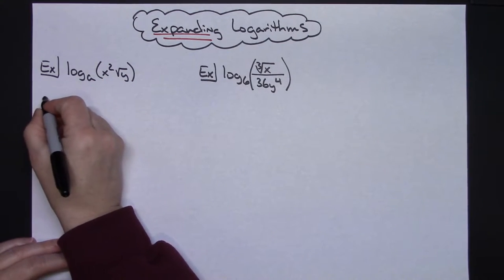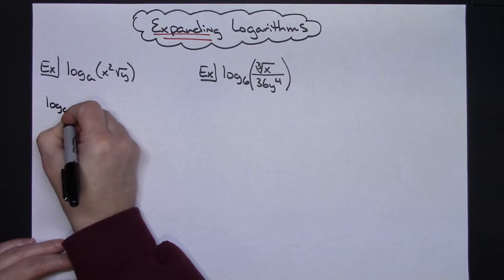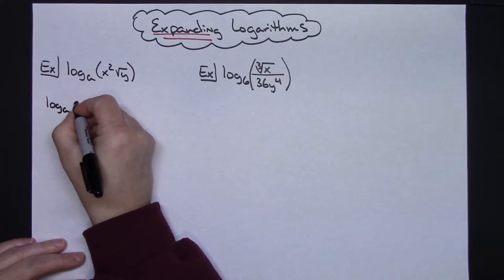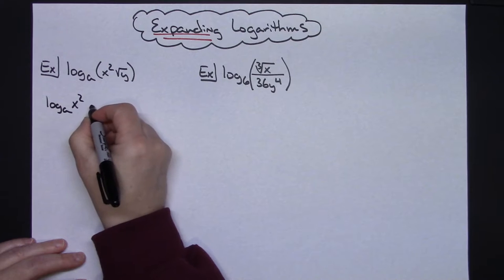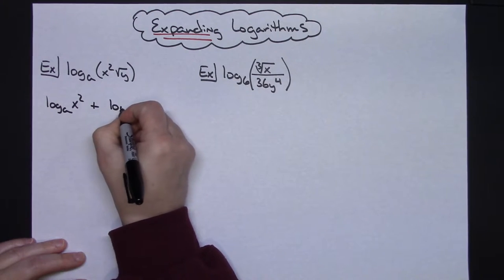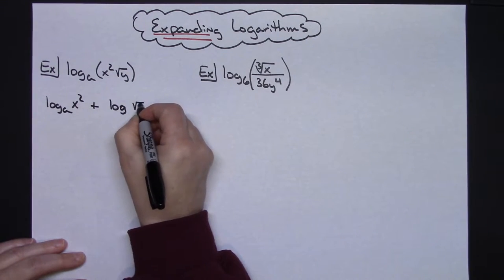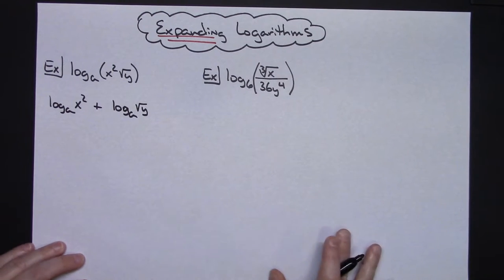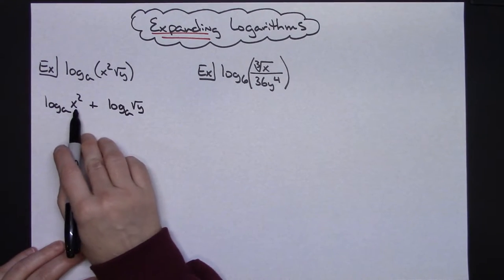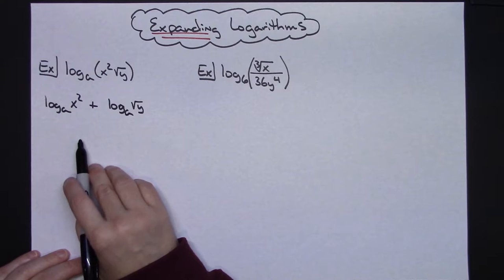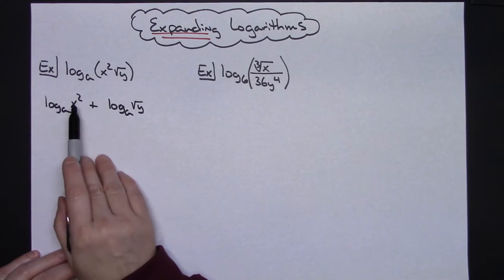We have a logarithm property that says if I am multiplying two things inside a log I can expand it with addition. So I'm going to take the log base a of x squared, plus the log base a of the square root of y. Now I'm going to take a look at each one of these and see if there's anything additional I can do.